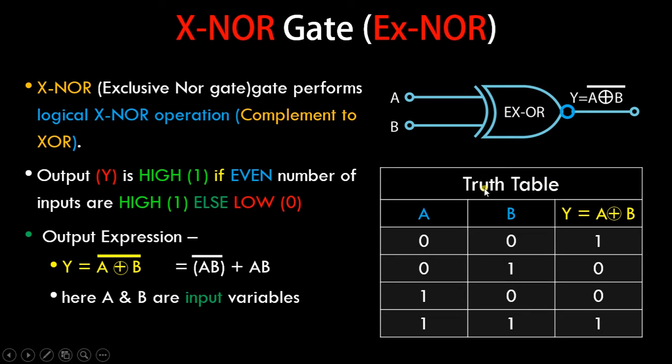Now taking the truth table into consideration, let's say A and B is 0, 0. Since even number of inputs are high, which means zero inputs are high, right? We don't have even one input which is 1. So that is 0, and 0 is considered as even, that is why the output is high. Then these two we know that odd number of inputs are high.